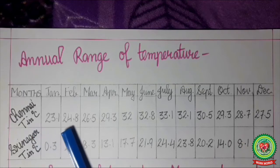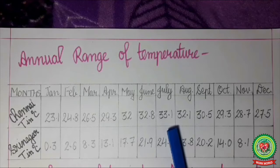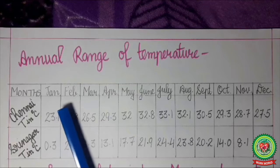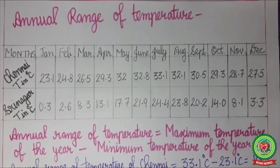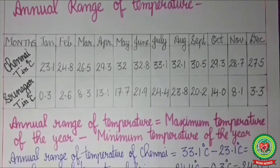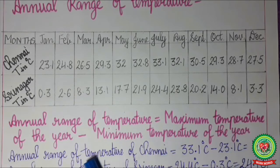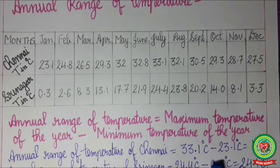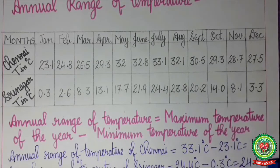In Chennai, the maximum temperature recorded is in July at 33.1 degrees Celsius, and the minimum temperature is 23.1 degrees Celsius in January. The annual range of temperature is calculated by the formula: annual range of temperature equals maximum temperature of the year minus minimum temperature of the year. So for Chennai: 33.1 degrees Celsius minus 23.1 degrees Celsius equals 10 degrees Celsius.